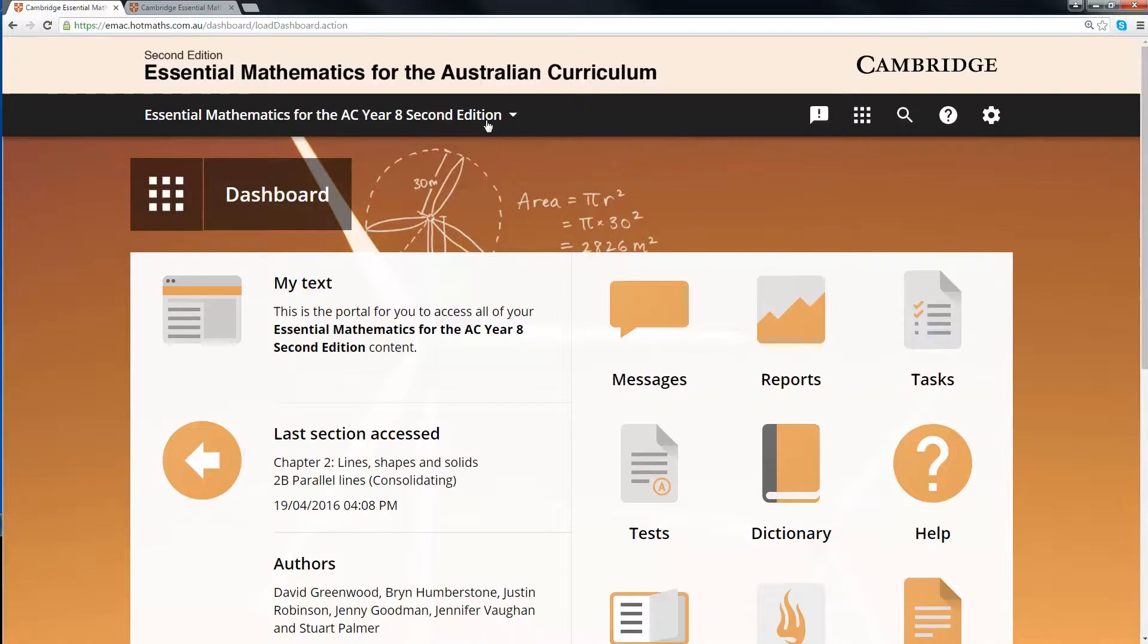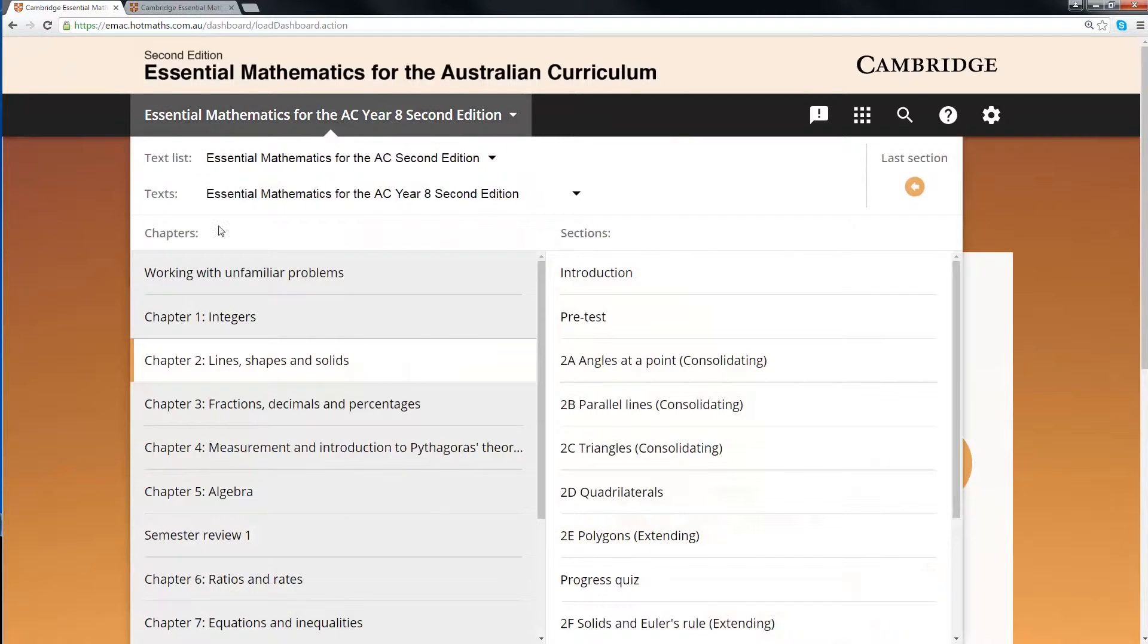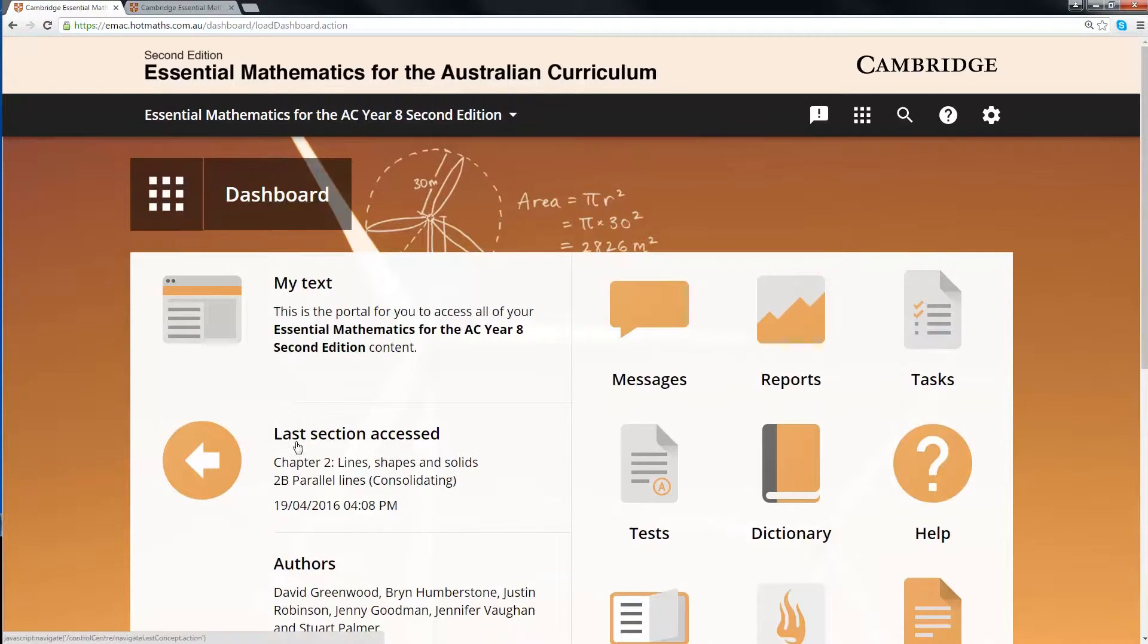You can do this by clicking on the dropdown box at the top, or you can click on the My Text button, or you can click on the Last Section Accessed.